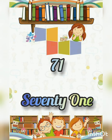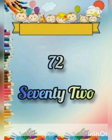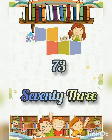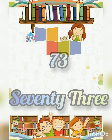71 — Seventy-one. S-E-V-E-N-T-Y-O-N-E. 72 — Seventy-two. S-E-V-E-N-T-Y-T-W-O. 73 — Seventy-three. S-E-V-E-N-T-Y-T-H-R-E-E.